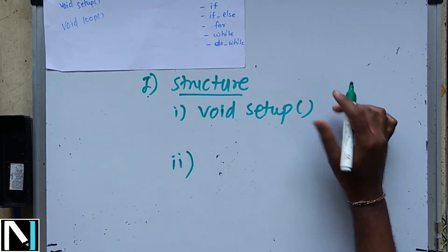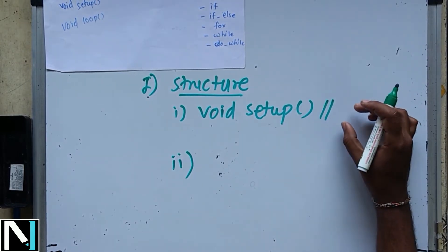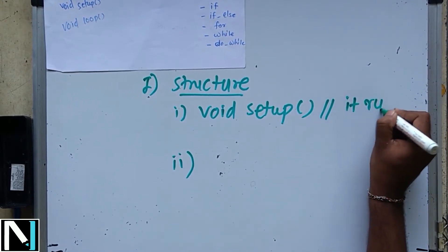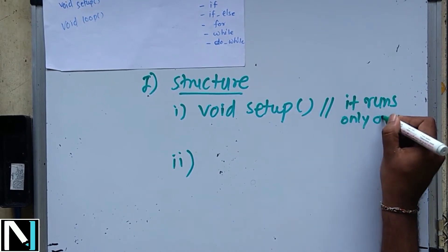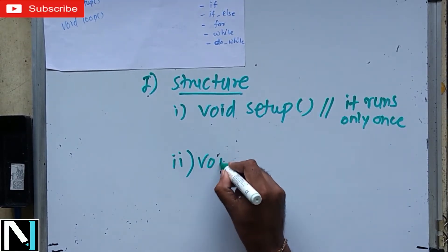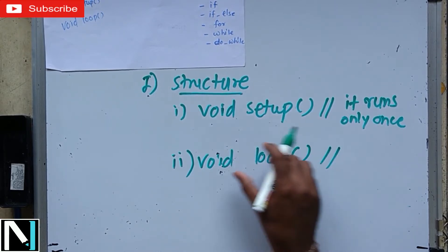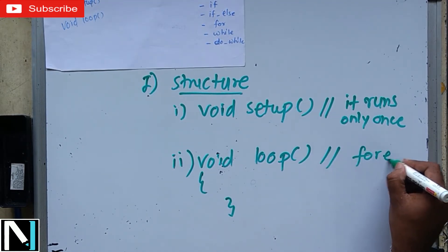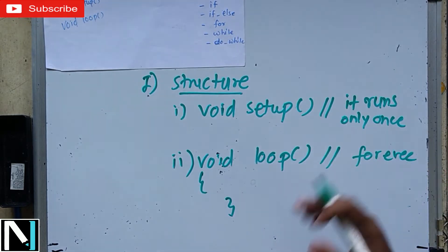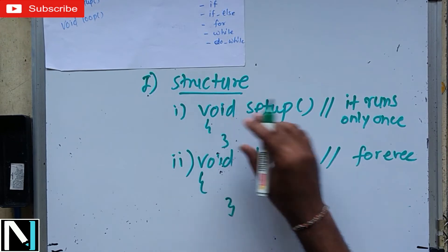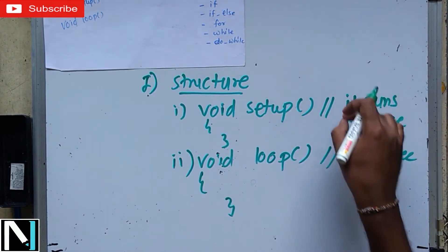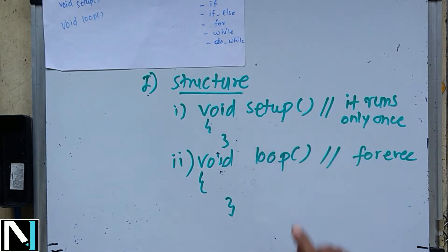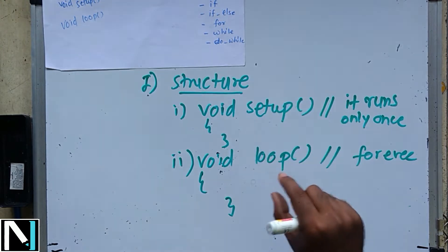Void setup is a function used to configure and initialize the hardware pins, and it runs only once. Void loop is always written for executing the code forever, or infinitely. This loop will continuously execute while void setup will execute only once. If you look at the structure of the Arduino program, it has only two structures: void setup and void loop.